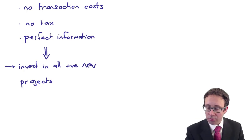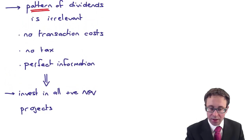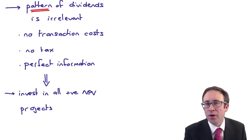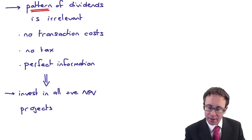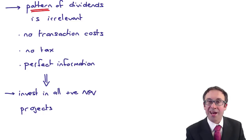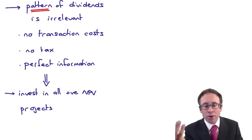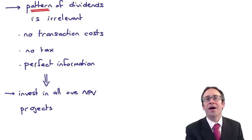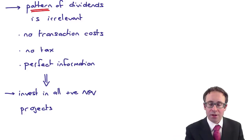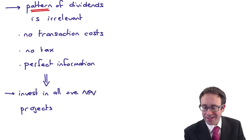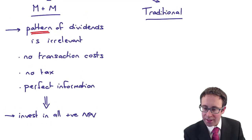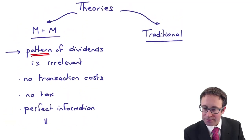Again, there are some assumptions, and as you can see they are a bit of a load of nonsense — a bit crazy. It doesn't happen in the real world. There are transaction costs — how on earth do brokers make their money? There is tax — how do governments make their money? And there isn't perfect information; information is withheld.